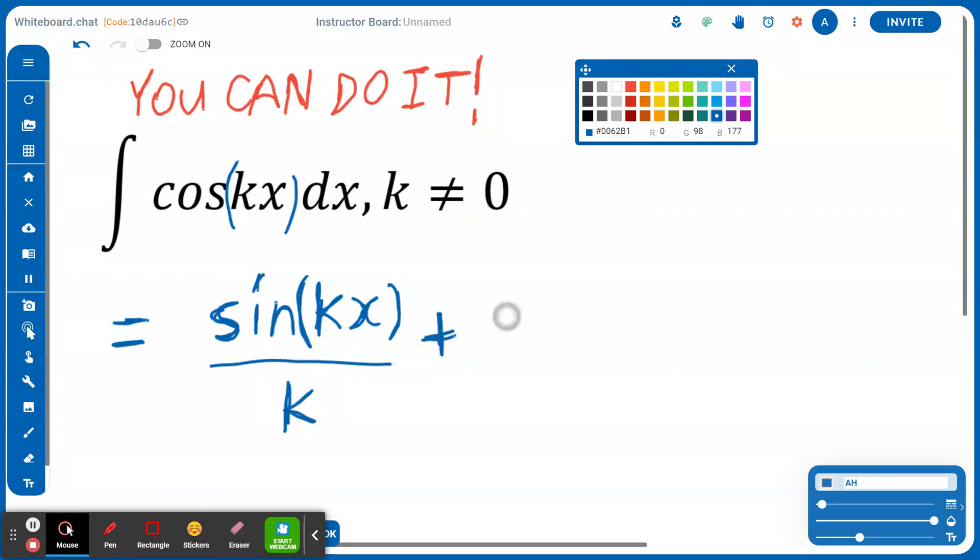Again, don't forget to add a constant C. You're not looking for one solution. You're looking for infinitely many solutions, which we're collapsing into this one line, also known as a family of solutions.